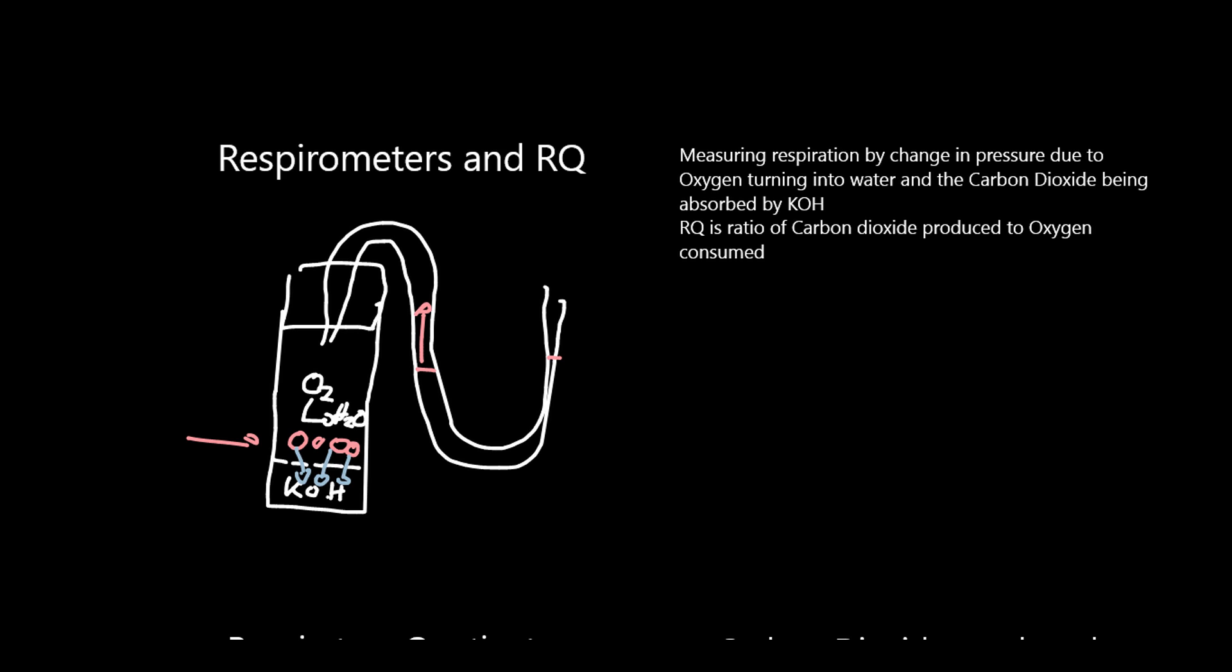A modification to this is sometimes done by including a thermobarometer. A thermobarometer is exactly the same apparatus, but on the other side of the manometer. And the purpose of this is to balance any changes in pressure which are not due to the respiration of the organism.